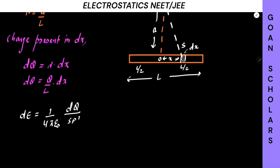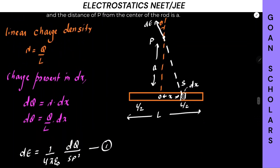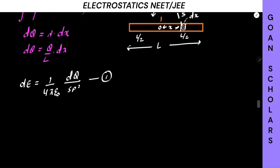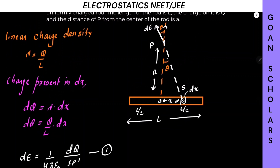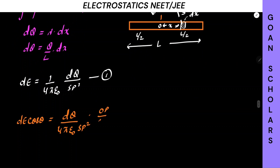So this will be our electric field — equation number 1. The electric field along the perpendicular direction will be dE cos theta. The dE cos theta in this direction and dE sin theta in the perpendicular direction — sin thetas cancel. Cos theta will be base OP divided by hypotenuse SP, that is A/SP. So let's write OP/SP here.